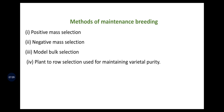Let us see the methods of maintenance breeding. The common methods are: positive mass selection, negative mass selection, model bulk selection, and plant-to-row selection — all used for maintaining varietal purity. Generally these methods are commonly used in self-pollinated crops because in self-pollinated crops maintaining the line is quite easy compared to cross-pollinated crops.